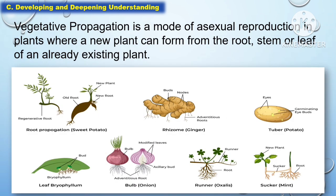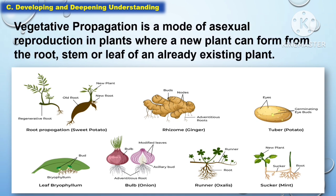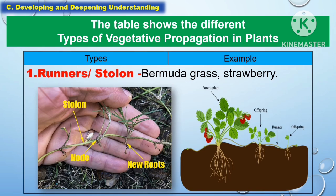Vegetative propagation is a mode of asexual reproduction in plants where a new plant can form from the root, stem, or leaf of an already existing plant. The first type is runners or stolons — an above-ground stem that grows horizontally along the surface. When the stem touches the ground, buds form roots and leaves, and a new plant develops. Examples for this are bermuda grass and the strawberry plant.